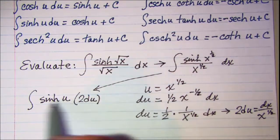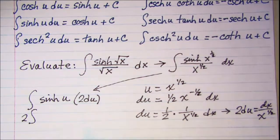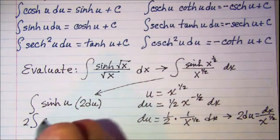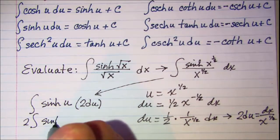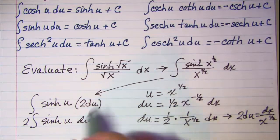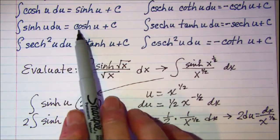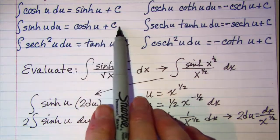Now my 2, I can bring out in front of my integral. So I'm just doing the integral of hyperbolic sine u du. And from my rules, I see that that's equal to the hyperbolic cosine u plus a constant.